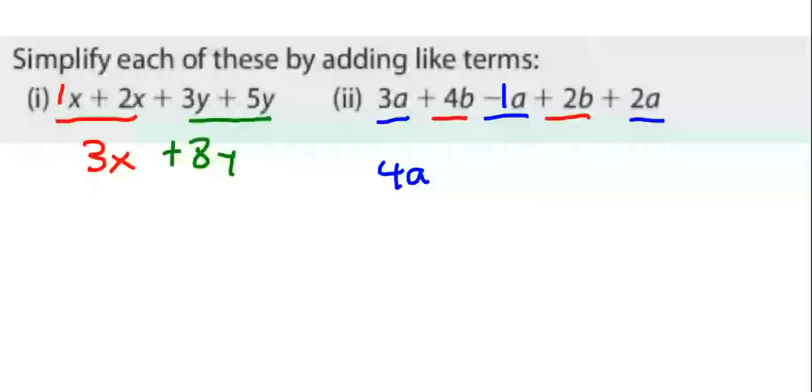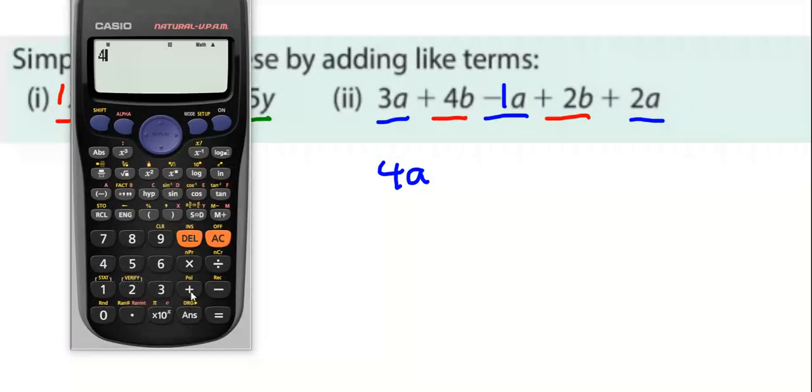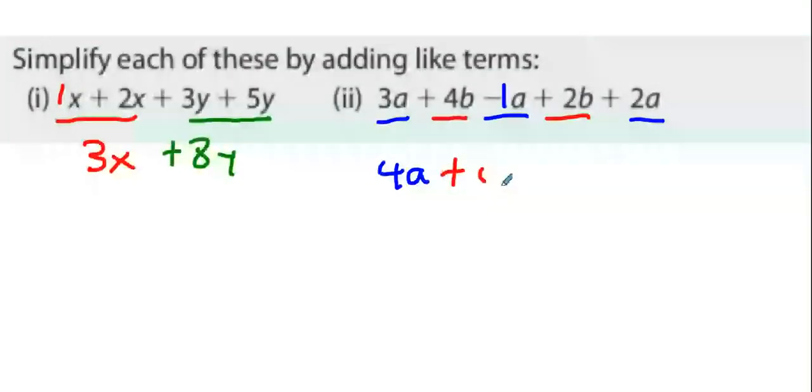And then what we're going to get is an answer of 4A. And then I'm going to go to the red ones now. And I'm going to do four plus two. Six B. See the way you can use your calculator to keep track as well?